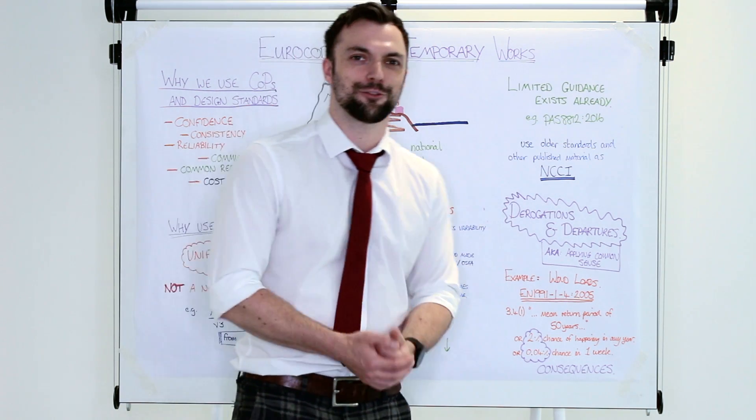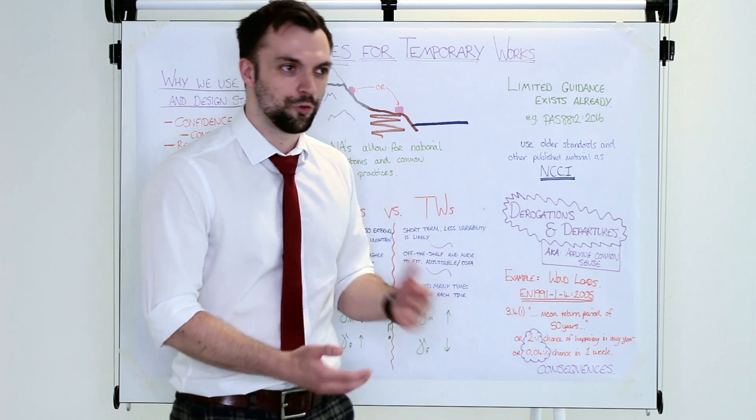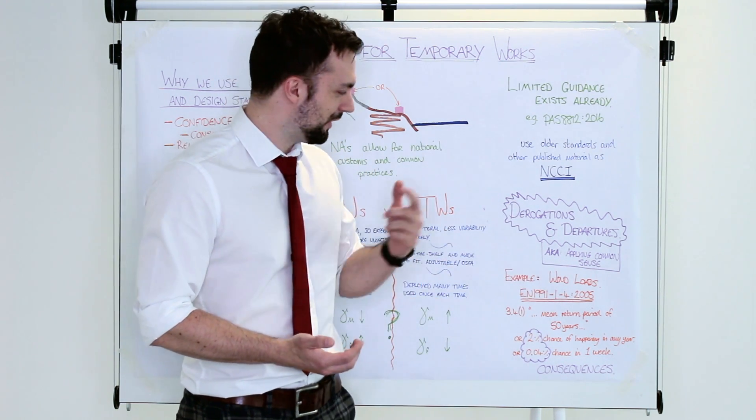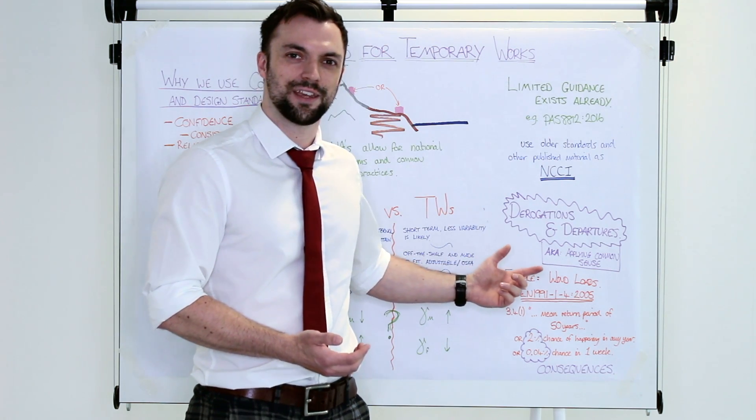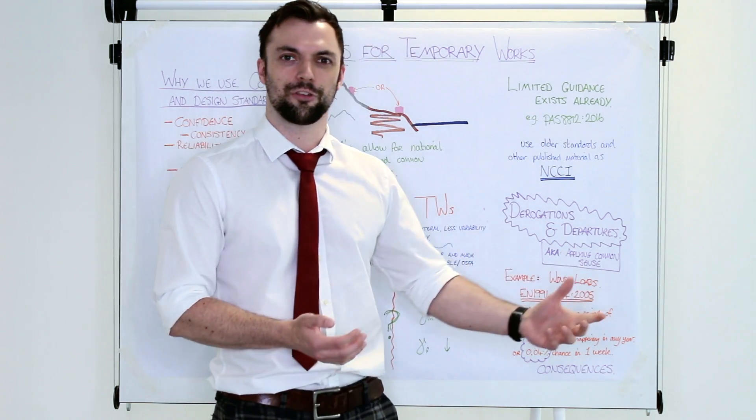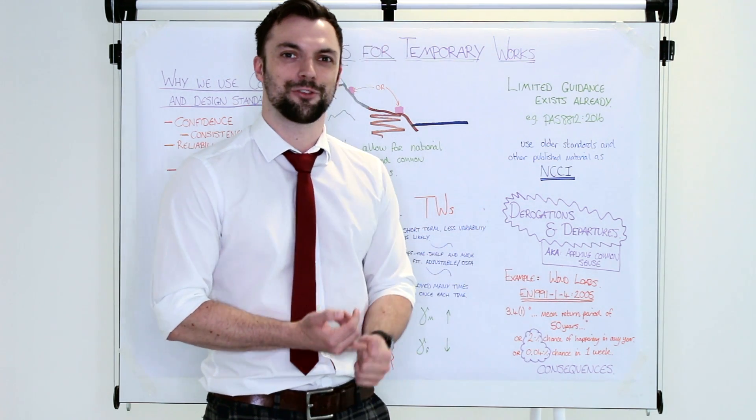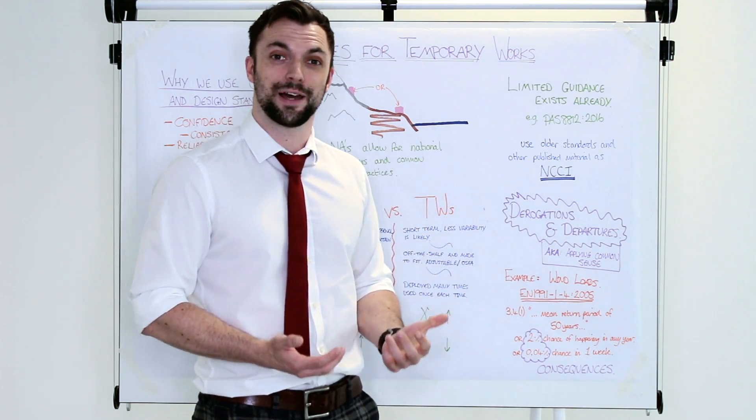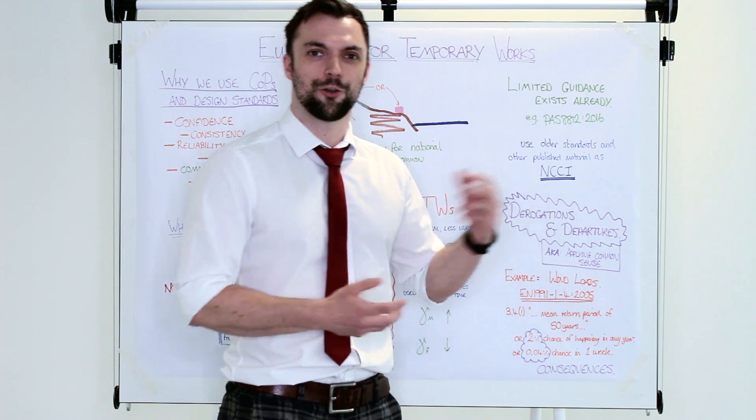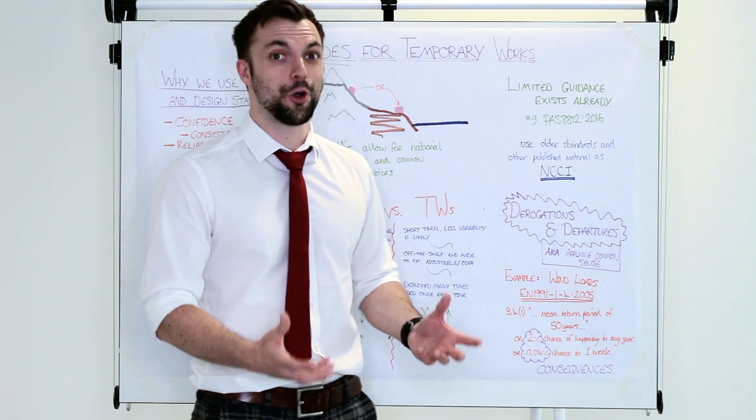There is always my favourite, derogations and departures from the code, otherwise known as applying common sense. Sometimes the codes will ask you to do things to take everything into account. But let's say you know that you don't need to take it into account. Let's say emergency services need to get across a bridge. We've got some pedestrian bridges that we certainly won't be driving ambulances across. So why would we account for that when it's never going to happen? Or applying snow loads to something and also applying thermal effects. If it's hot and it's expanding, there's not going to be any snow on it.